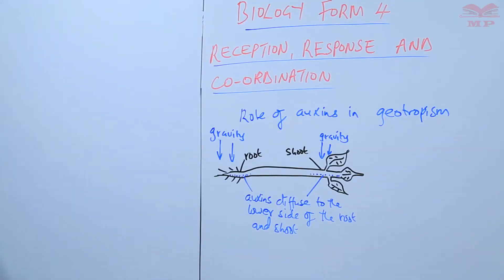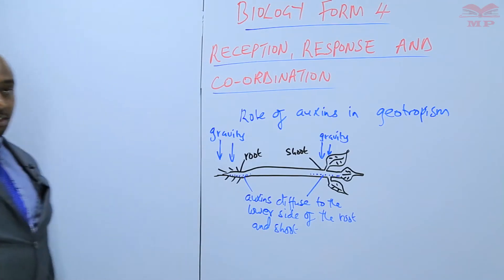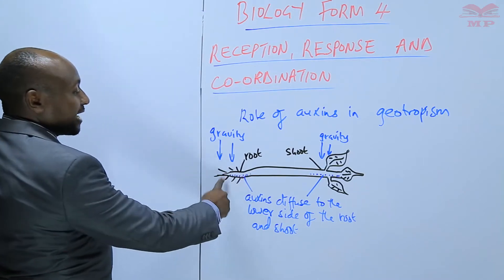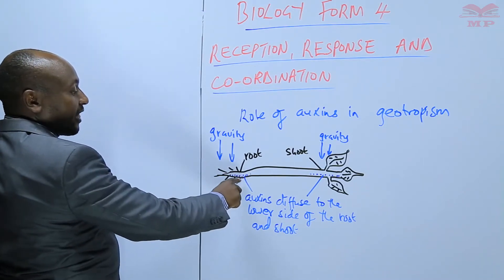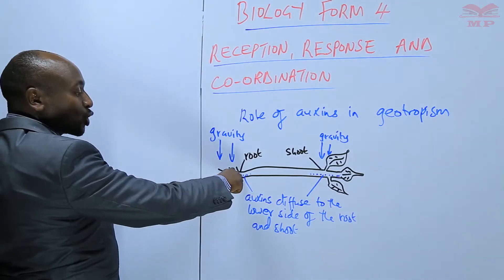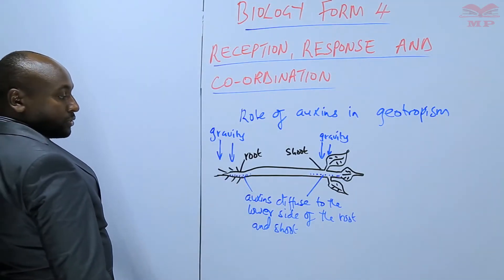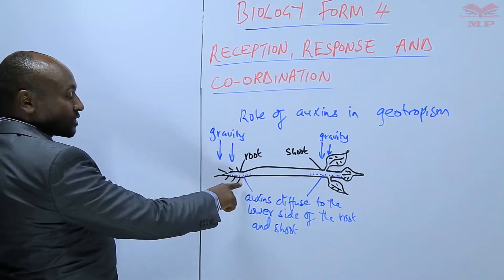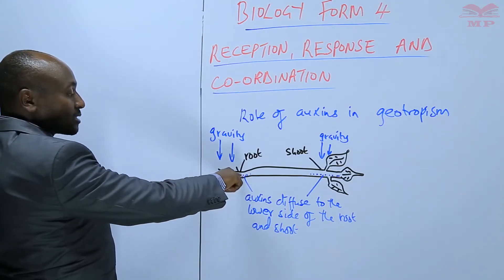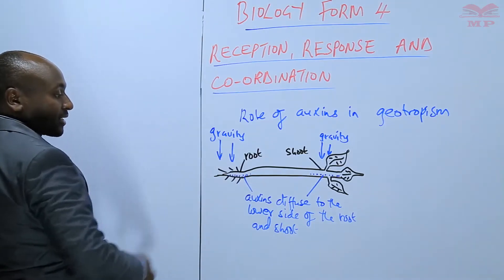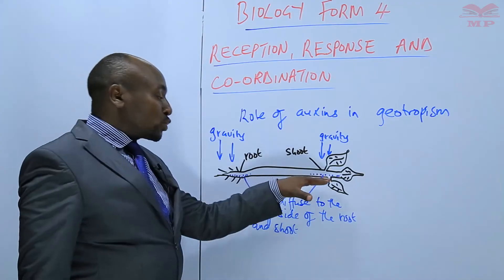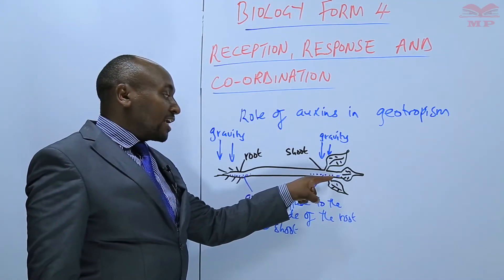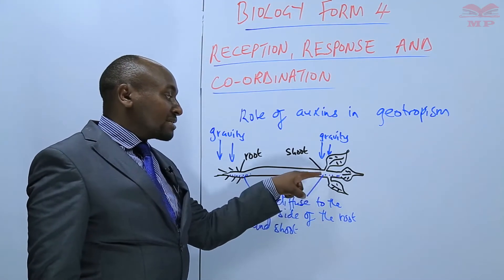On the side of the root, when the auxins are in high concentration, the rate of growth is slower. Note that — when auxins are in high concentration in the root, growth is lower. But in the case of the shoot, when the auxins are in high concentration, the rate of growth is faster.